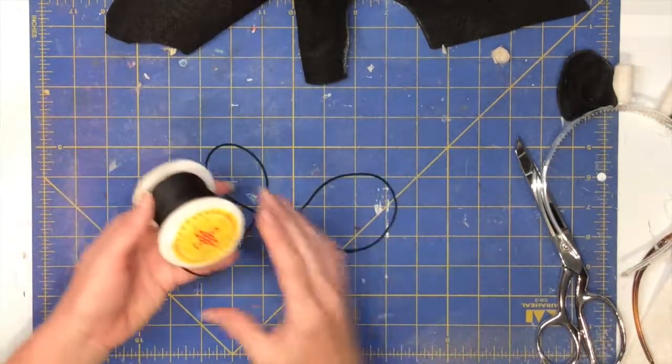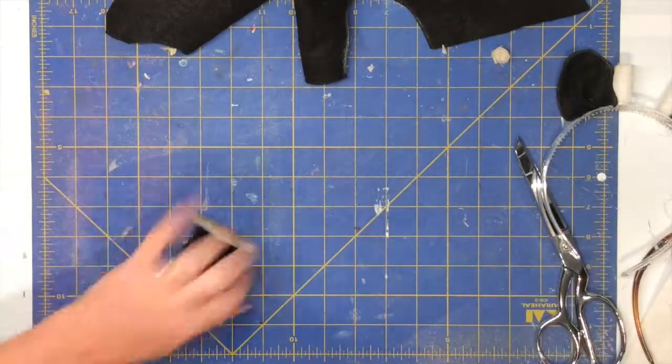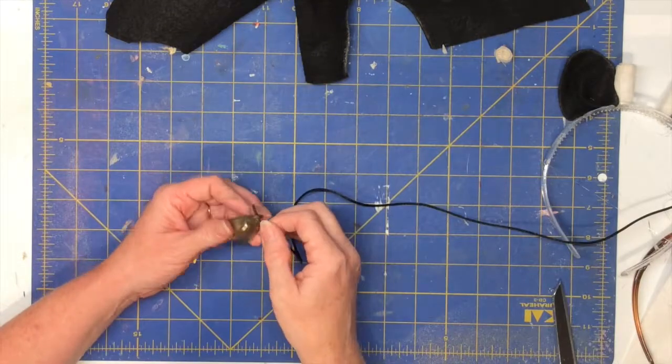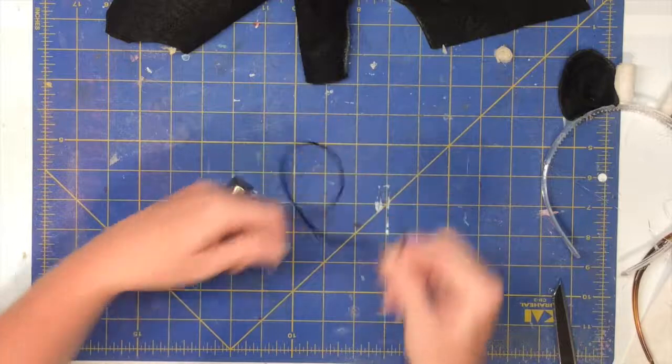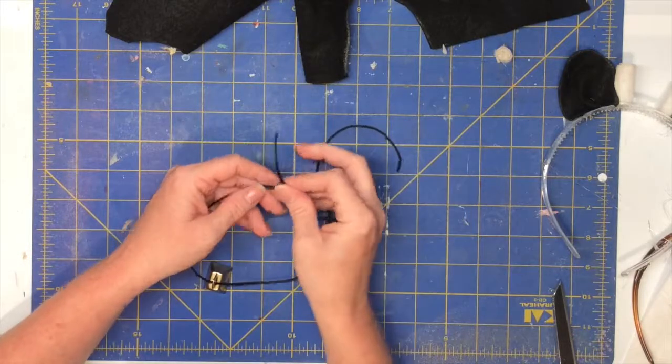Now I'm taking a length of cord long enough to go around my neck nicely, cutting that off, and stringing on a little tiny cowbell from the craft store. Now here's the trick.